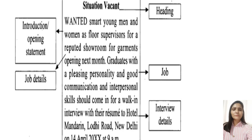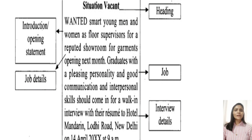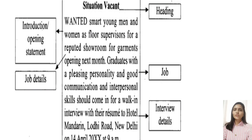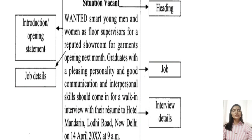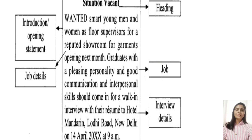Now we will understand how we will make our advertisement. First, make a rectangular box, then write the heading at the top middle in capital letters — all letters should be capital. After that, give an introduction of the product, then tell the qualities, and finally provide the contact details.